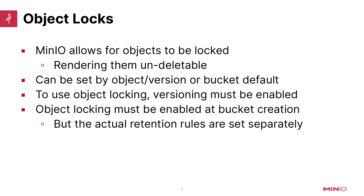MinIO allows your objects to be locked, which makes them undeletable. That also means you can't overwrite them, and the object will remain there until the lock expires. You can set locks either on a per-object basis or as a bucket default so that any objects uploaded to a bucket will be locked by default. To use object locking, you must have versioning enabled. Object locking has to be enabled at bucket creation, and at bucket creation versioning will be enabled automatically. The actual retention rules, however, are set separately — all you're saying is this object can be locked in this bucket.